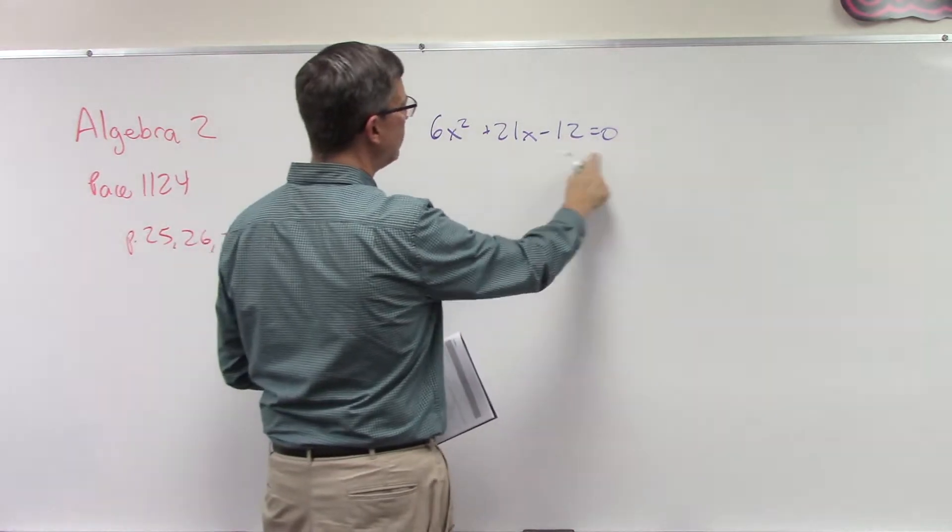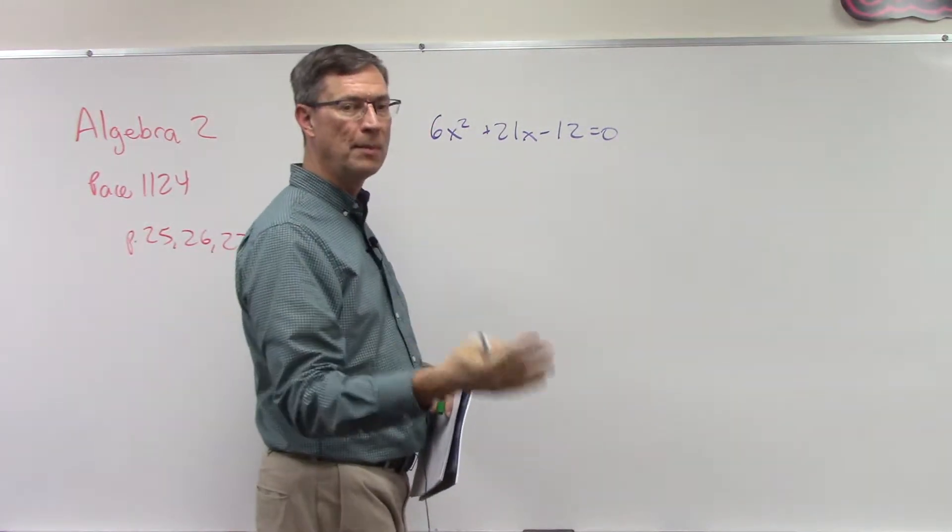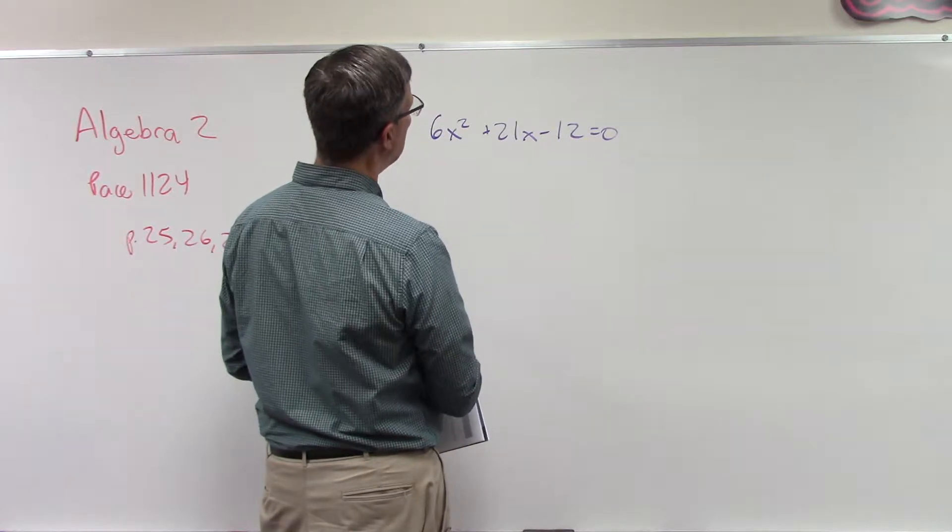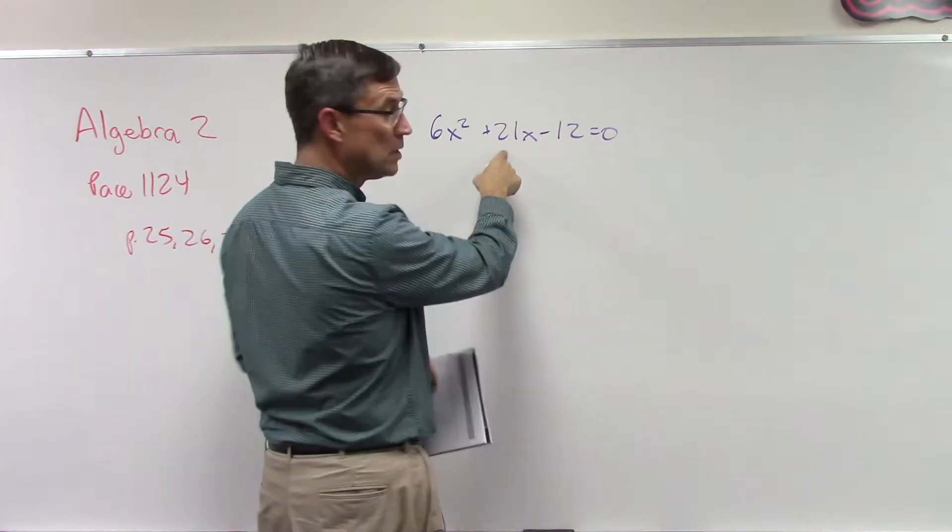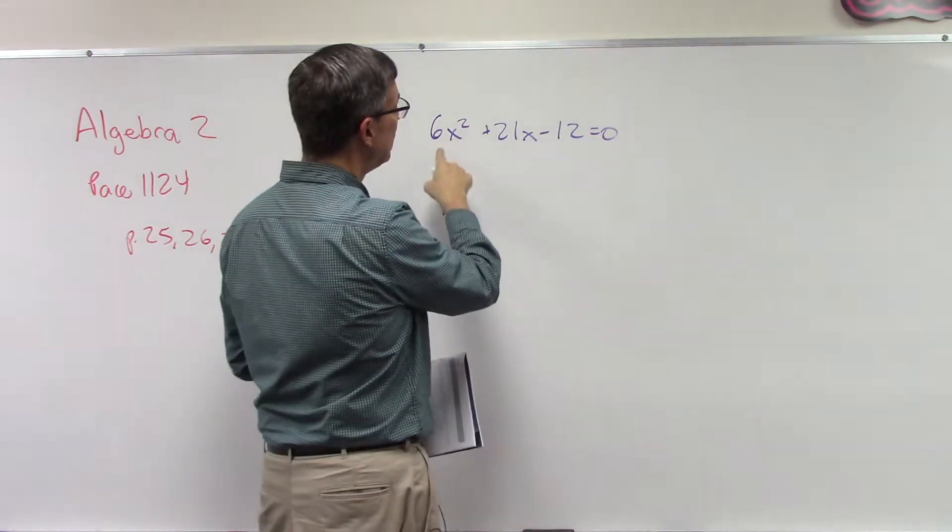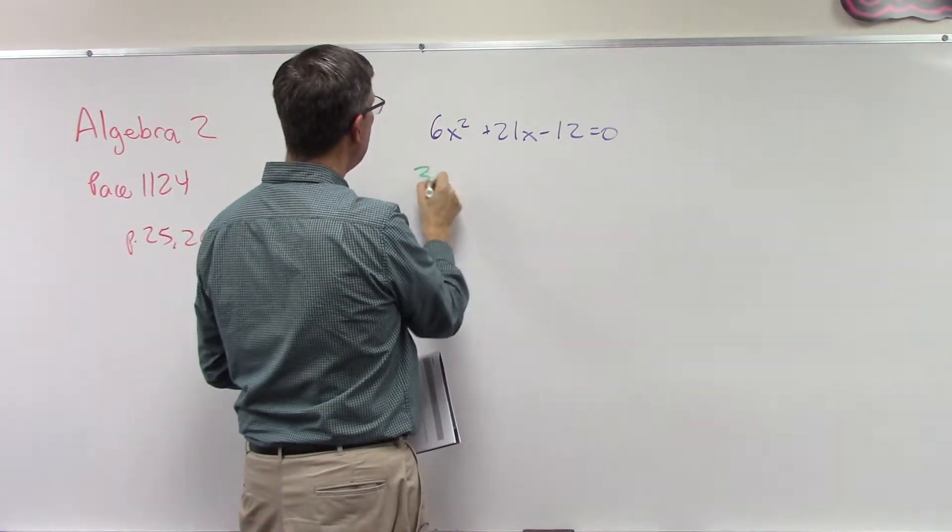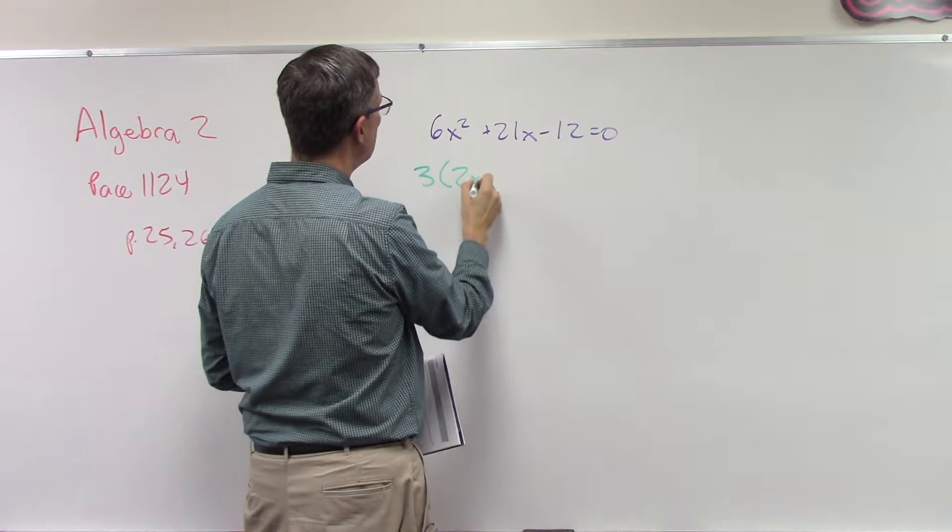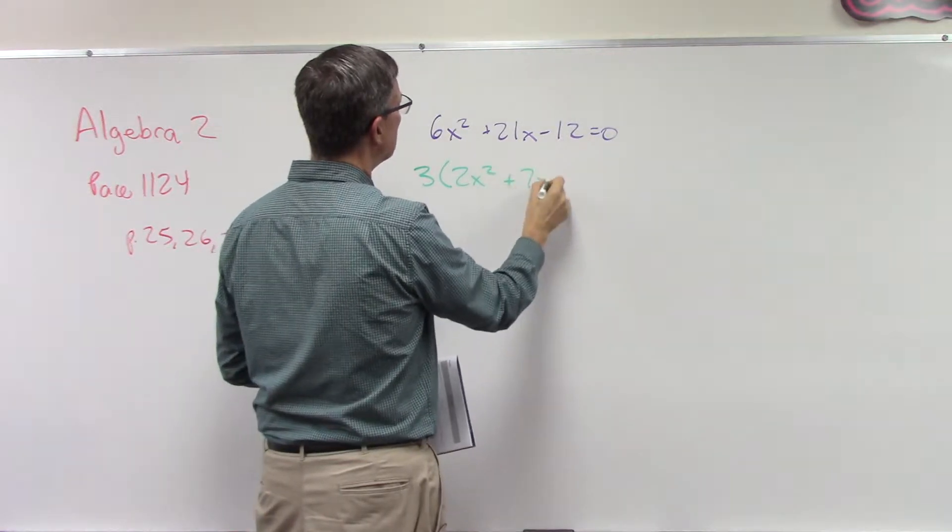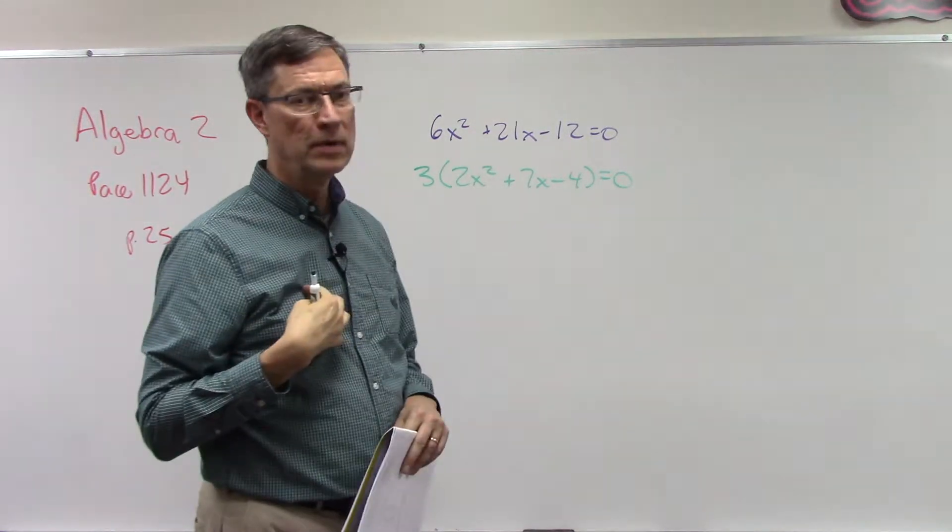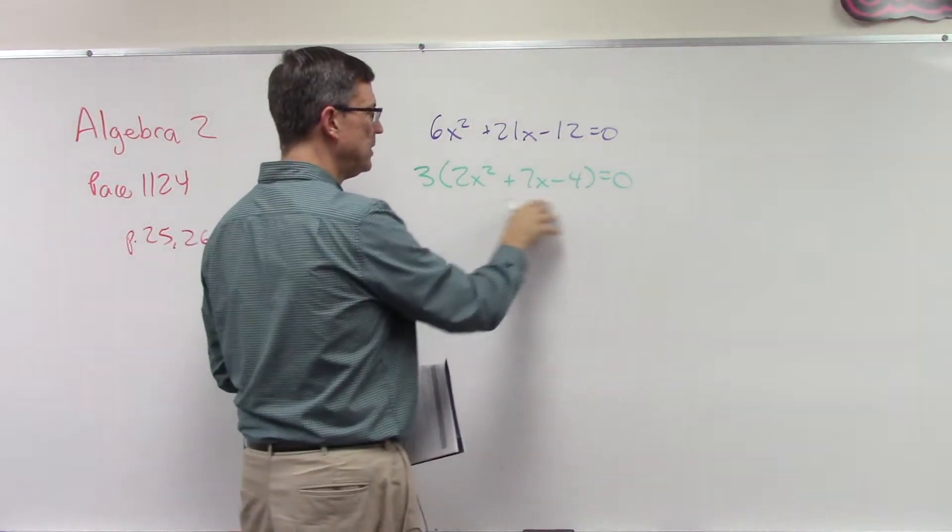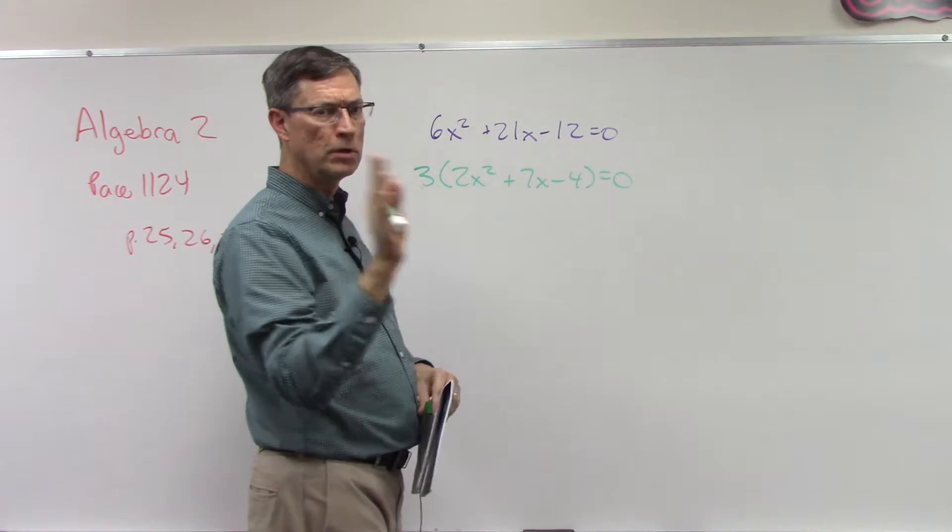Is there a common factor? You always ask yourself, is there a common factor I can take out of everything? 6 would come out of these two but not this, but this is divisible by 3. So I think I can take 3 out of everything and have 2x² + 7x - 4.